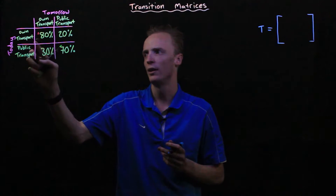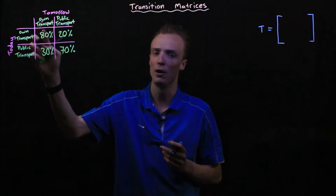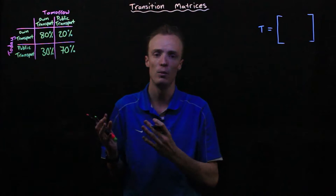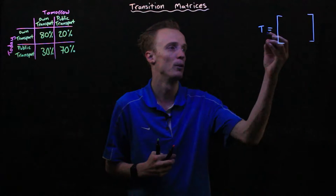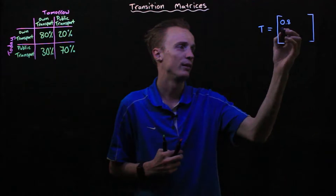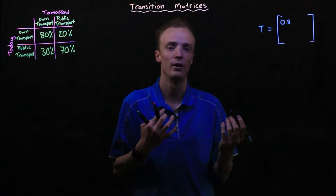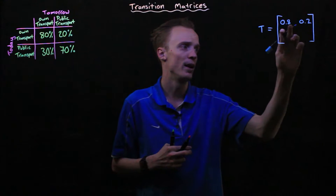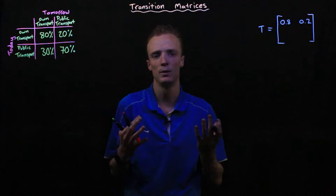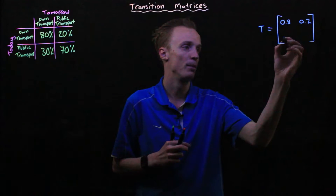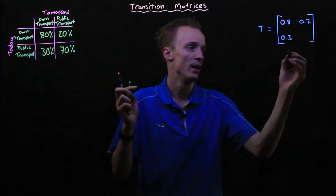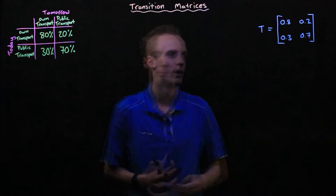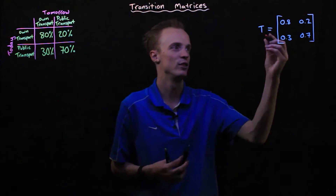If you've got an 80% chance of bringing your own transport tomorrow, given you brought your own transport today, we represent that as a decimal — 0.8. The 20% chance of switching to public transport becomes 0.2. Adding these two together gives 1, which is the same as 100%. For the bottom row, we have 0.3 and 0.7, and that row also equals 1. This is our transition matrix T.